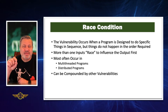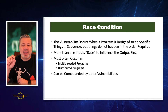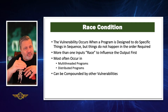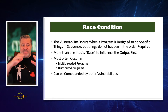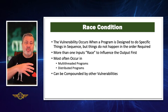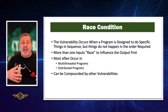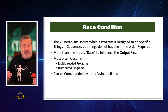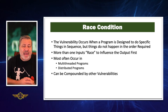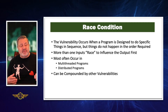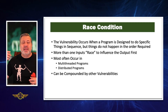This vulnerability occurs when a program is designed to do a specific thing in sequence, but things do not happen in the order required. More than one input races to influence the output first. So we want things to happen 1, 2, 3, 4, 5, and somehow they happen 1, 4, 3, 2, or whatever — they don't happen the way the programmer wanted. That's an issue because if we're handling things like cash transactions, inputs getting to the output in the wrong order could cause somebody to have more or less money than they should, or it could cause the system to crash altogether. This happens a lot in multi-threaded or distributed programs and can be compounded by other vulnerabilities.